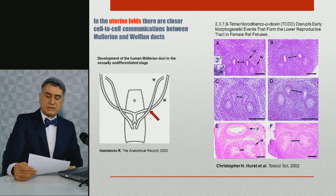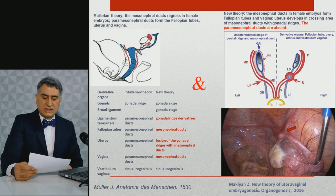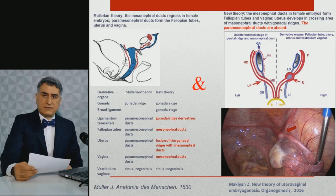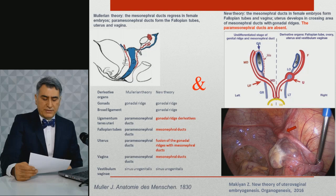The key differences between the existing and proposed new theory are as follows. In Müller's theory, the paramesonephral ducts form the uterus, fallopian tubes and vagina, while the mesonephral ducts regress in female embryos. In the new theory, the mesonephral ducts form the fallopian tubes and vagina; the uterus derives in the crossing area between mesonephral ducts and the gonadal ridges; paramesonephral ducts do not exist. There are two principal processes in uterine organogenesis: the intersection of gonadal ridges with mesonephral ducts to form the uterine faults with an endometrial cavity, and the fusion of both uterine faults together to form the unicavitary or normal uterus.